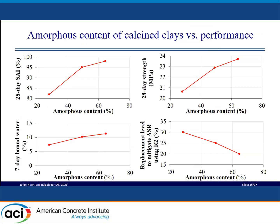In summary, this slide shows that for calcined clays from the same source, as we increase the amorphous content, the performance increases. As an example, the 28-day strength activity index, 28-day compressive strength, and 7-day bound water increase, and the required dosage to mitigate ASR decreases with increasing amorphous content of calcined clays. This relationship can be used to determine whether a certain amorphous content of calcined clay is acceptable performance-wise.